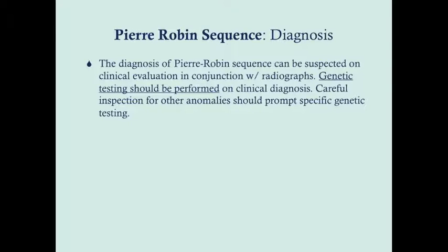The diagnosis of Pierre Robin sequence can be suspected on clinical evaluation — remember, it's just a triad. In conjunction with radiographs, you should always do genetic testing to obtain a clinical diagnosis if you suspect any syndromes. Look for other anomalies: inspect the eyes, ears, and limbs, which can indicate what specific genetic testing you want to order.